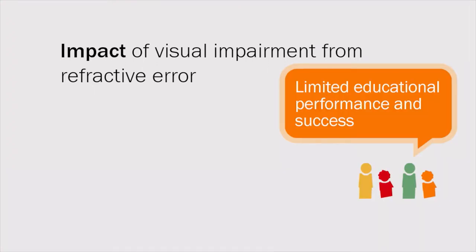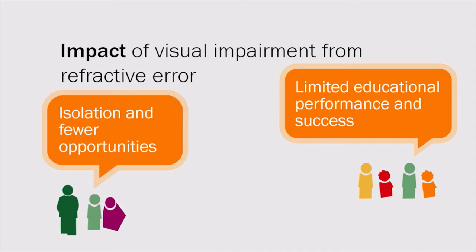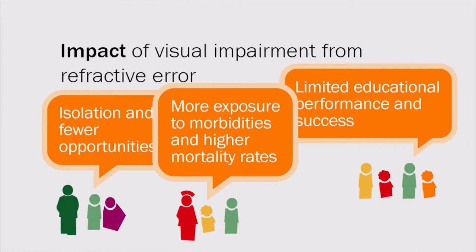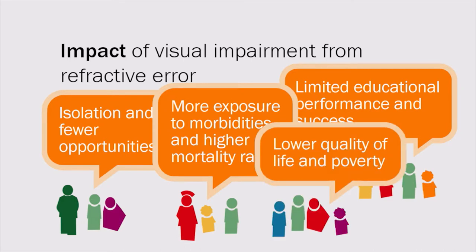Functional impairment from refractive error impacts both individuals and society, leading to limited educational performance and success amongst children, social isolation and fewer opportunities for work and education, more exposure to morbidities and higher mortality rates, and generally a lower quality of life and poverty.